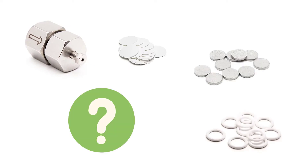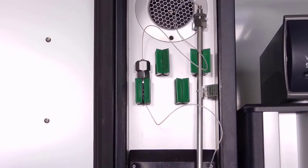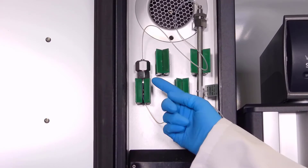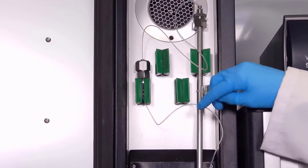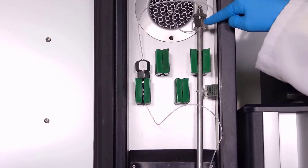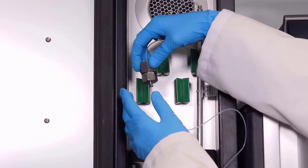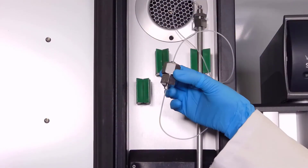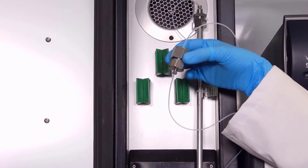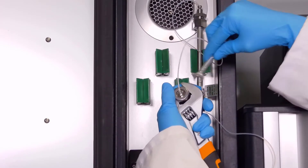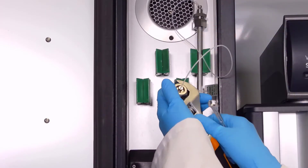Fortunately, replacing the post-column filter is one of the easiest things you can do to help keep your OmniSEC system healthy. This video will show you how to replace your post-column filter. First, locate the current post-column filter in OmniSEC Resolve. This filter should be located inside the column compartment, after the analytical column set and before the exit line that flows into OmniSEC Reveal.